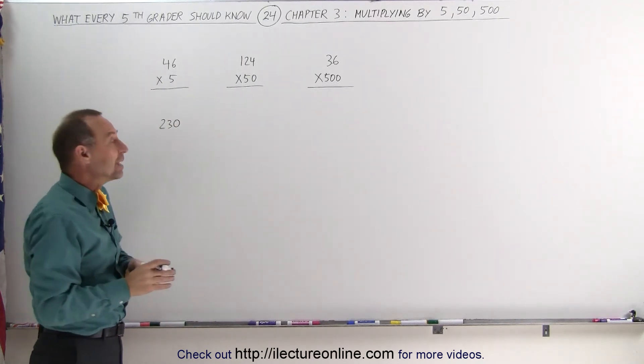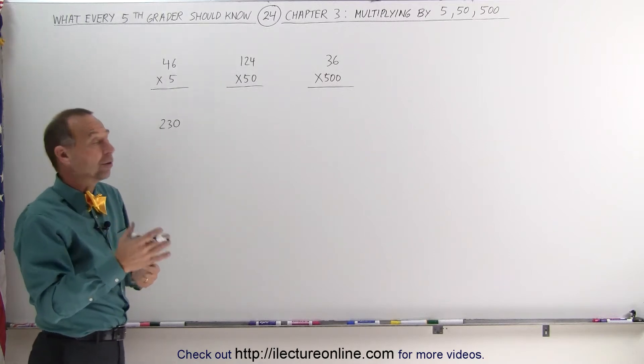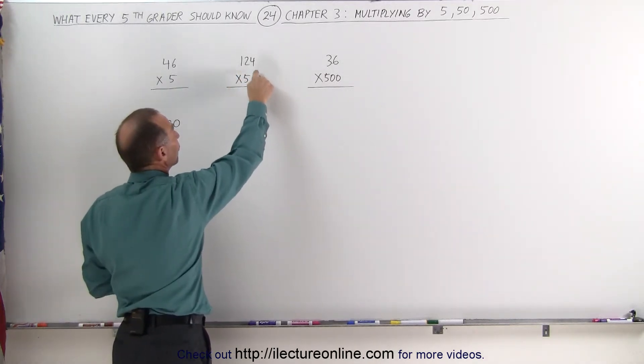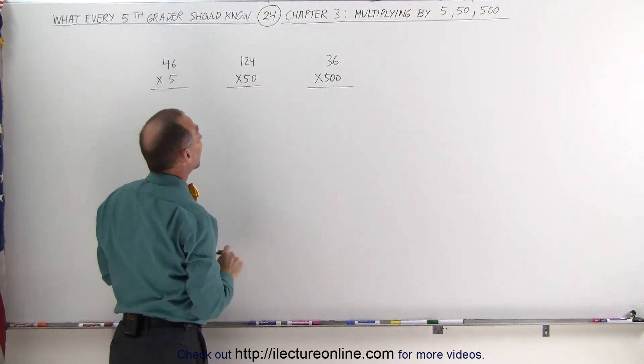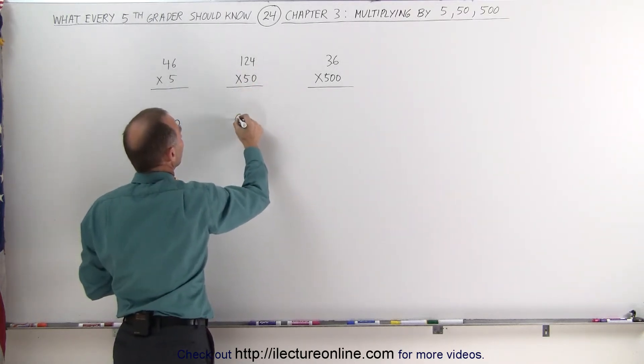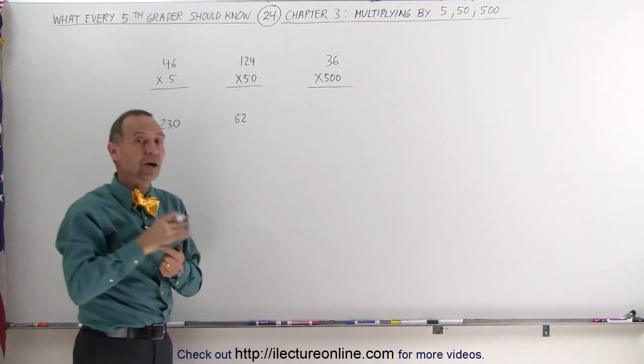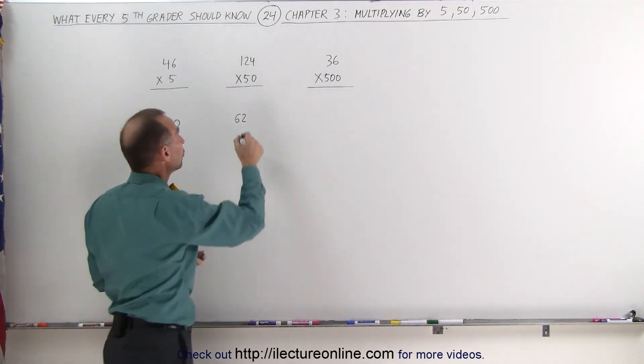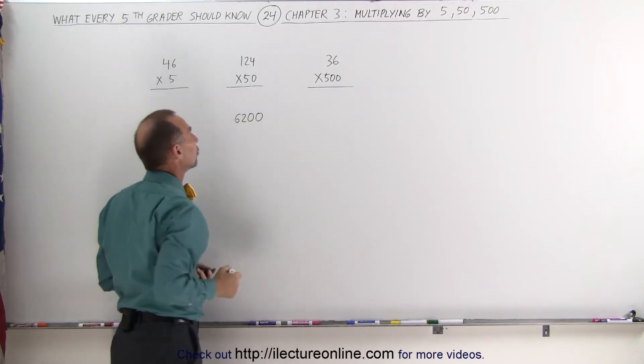When the number is 50, we add one more 0. For example, 124 times 50. We first divide 124 by 2. 124 divided by 2 is 62. Now we multiply times 100, twice 50. That's like adding two zeros, you get 6,200.